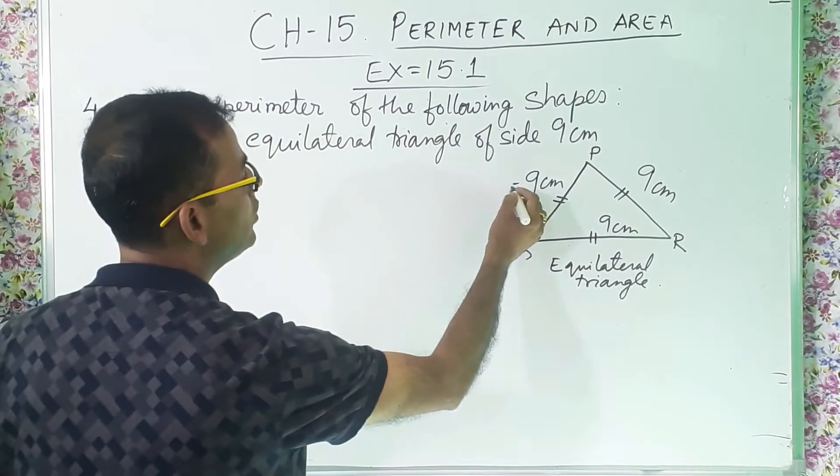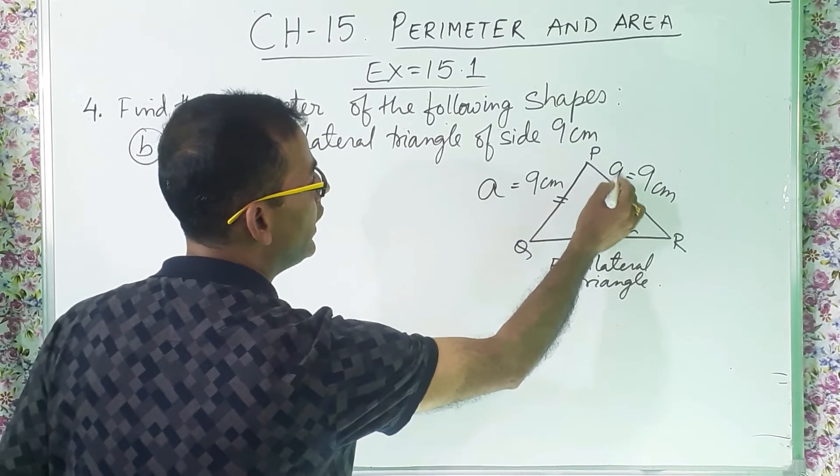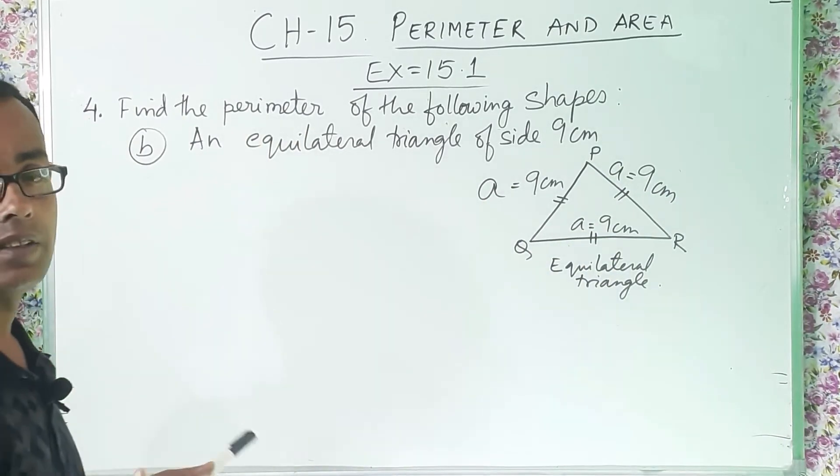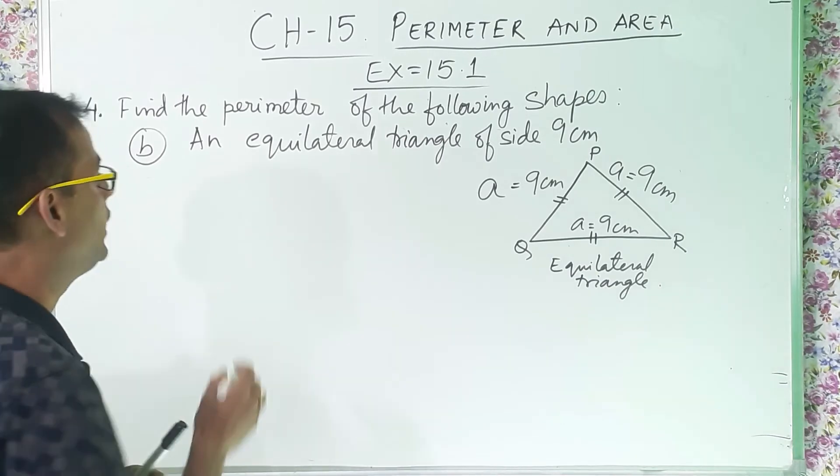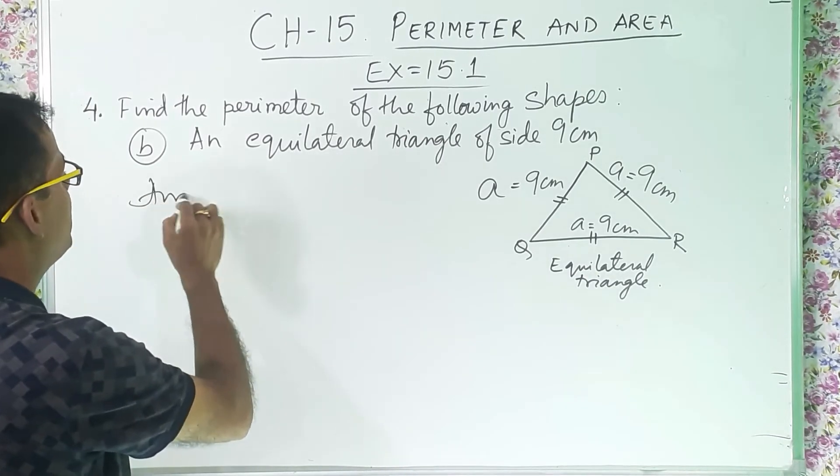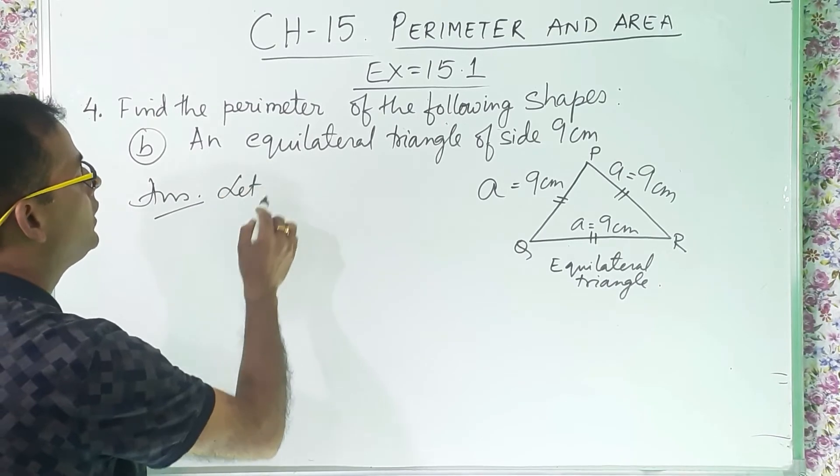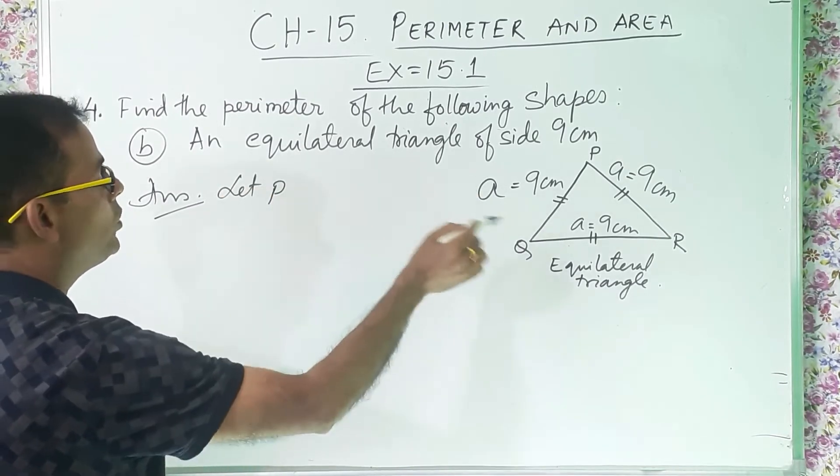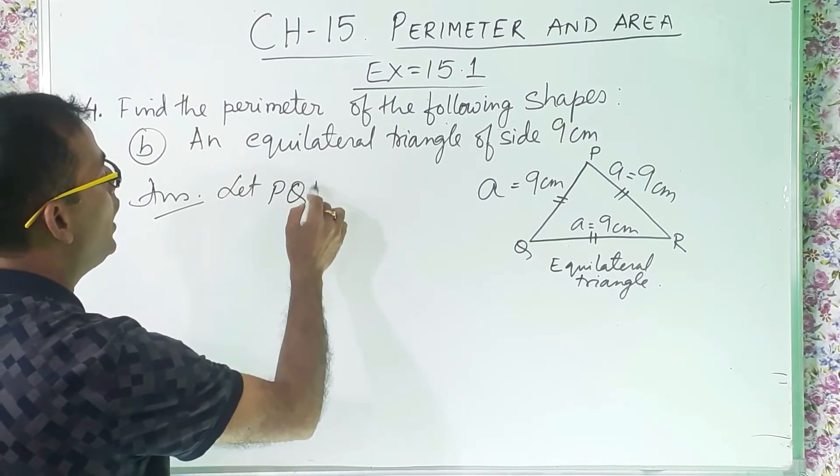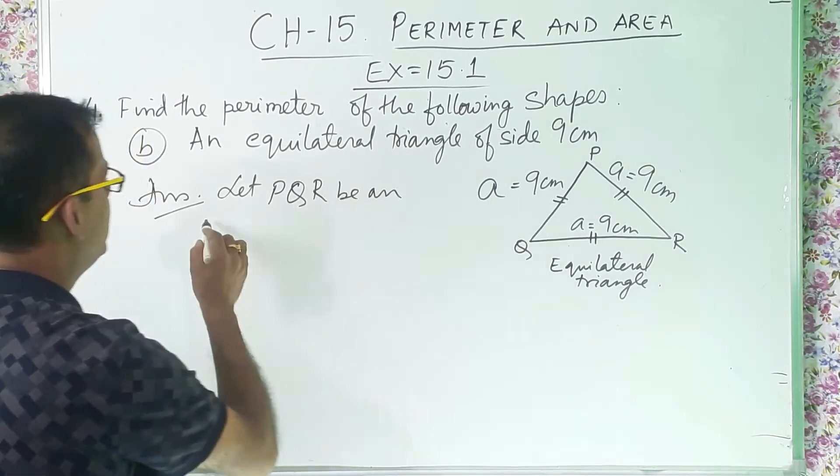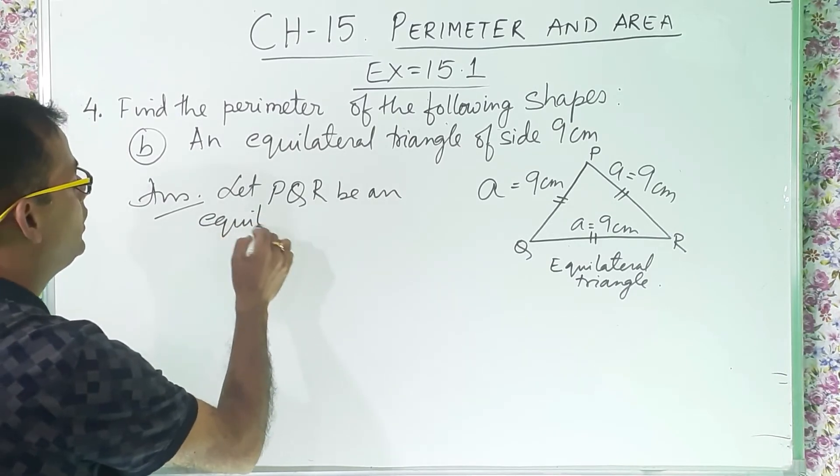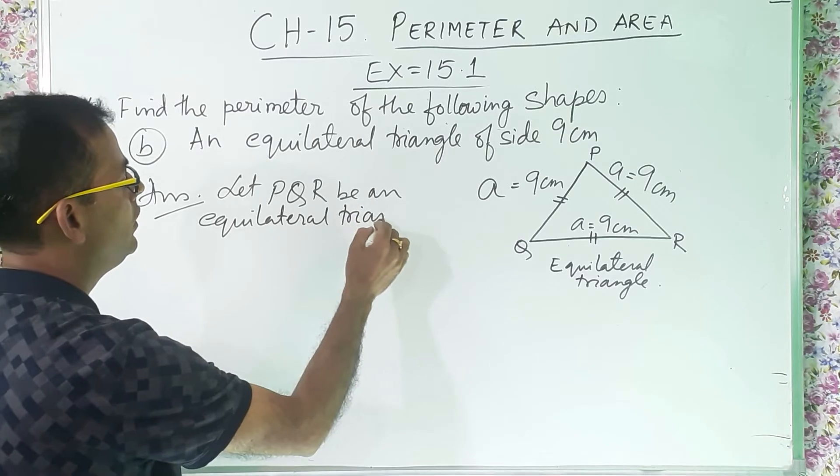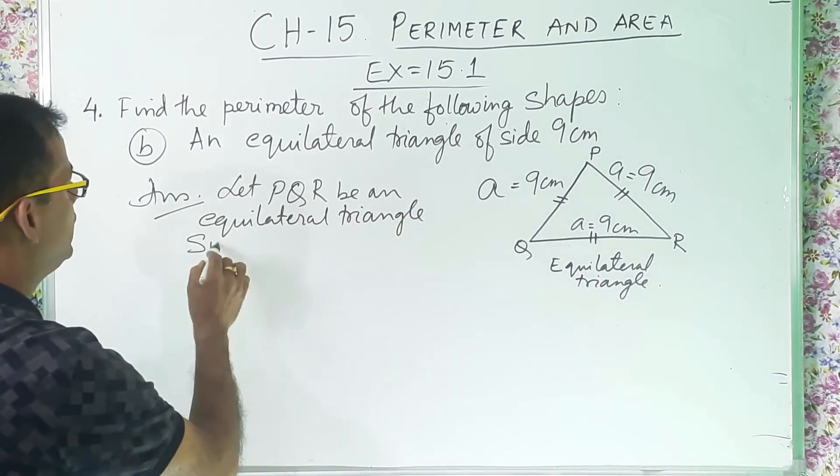So now we can write this one a, this one also a, this one also a. So a means stands for side. So now the solution answer. Let what? A, okay, we have done P, Q, R. Let P, Q, R be an equilateral triangle such that...